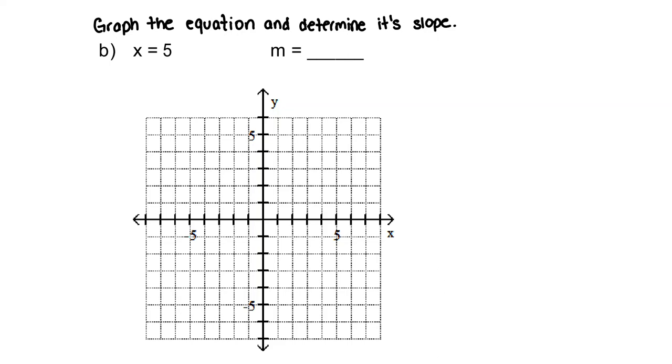Now whenever you have an equation with one variable, that's a telltale sign that your line is either going to be vertical or horizontal. So whenever you have x equal to a number, that means you're going to have a vertical line. And that vertical line is going to be at that value.